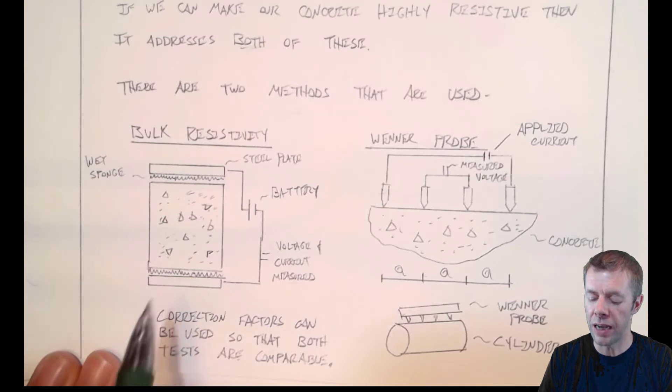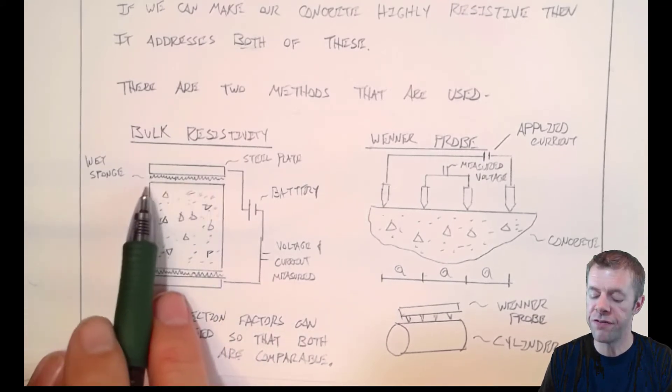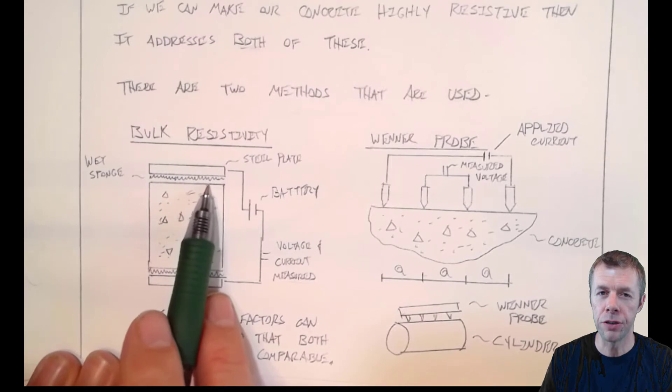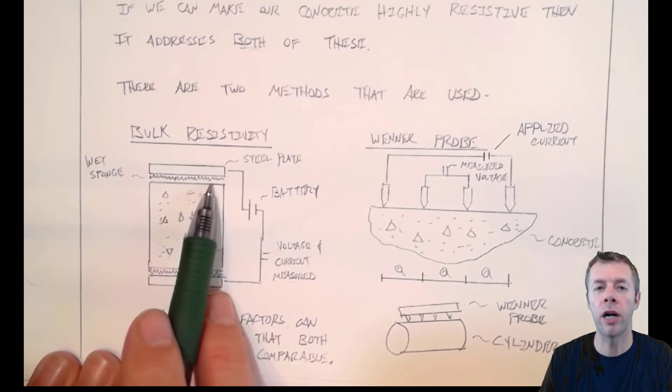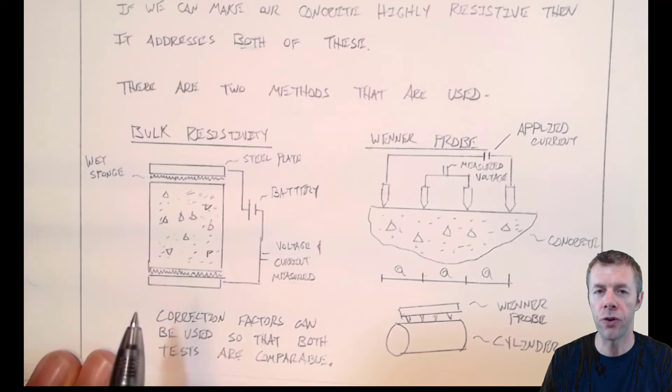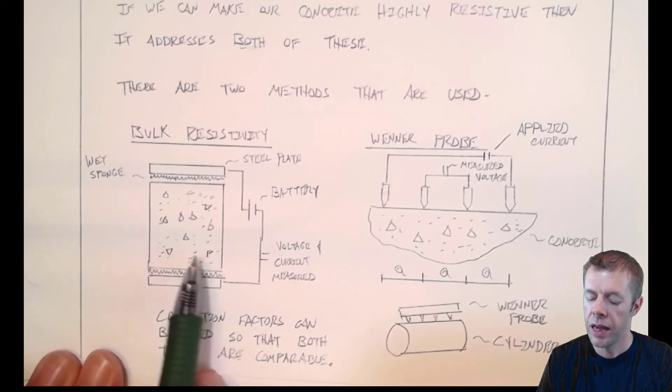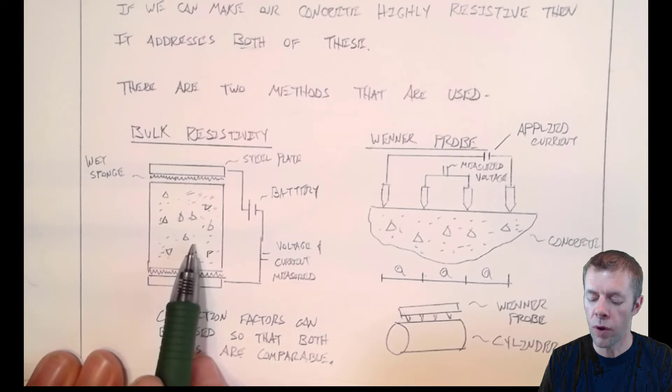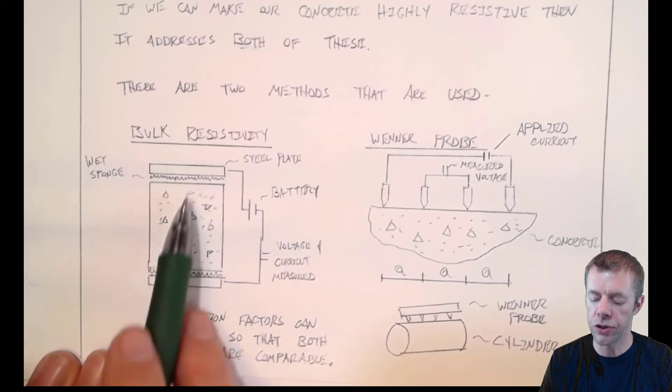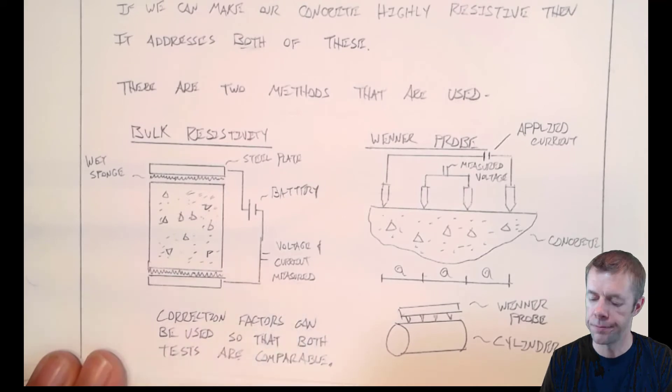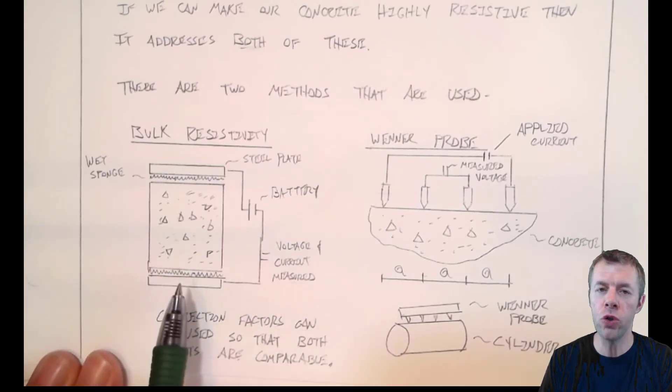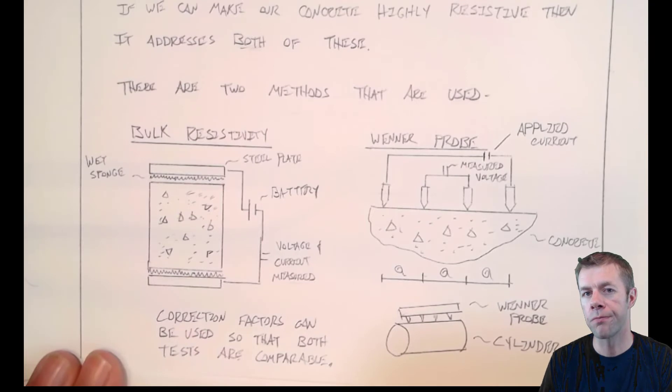In the bulk resistivity test, you have a steel plate, and then you have this very, very wet sponge. How wet? You leave the sponge in water before you test it. Take it out, put it on the concrete, then you test the concrete. Just need something to transfer the electrons. And then you have your concrete. We have a battery hooked up to it, so we're sending electrons through it, and we measure the voltage and current. With this test, you actually have to use two different voltages and currents. I'm not going to talk about that right now. But from that information, you can get the resistivity. It's pretty straightforward.